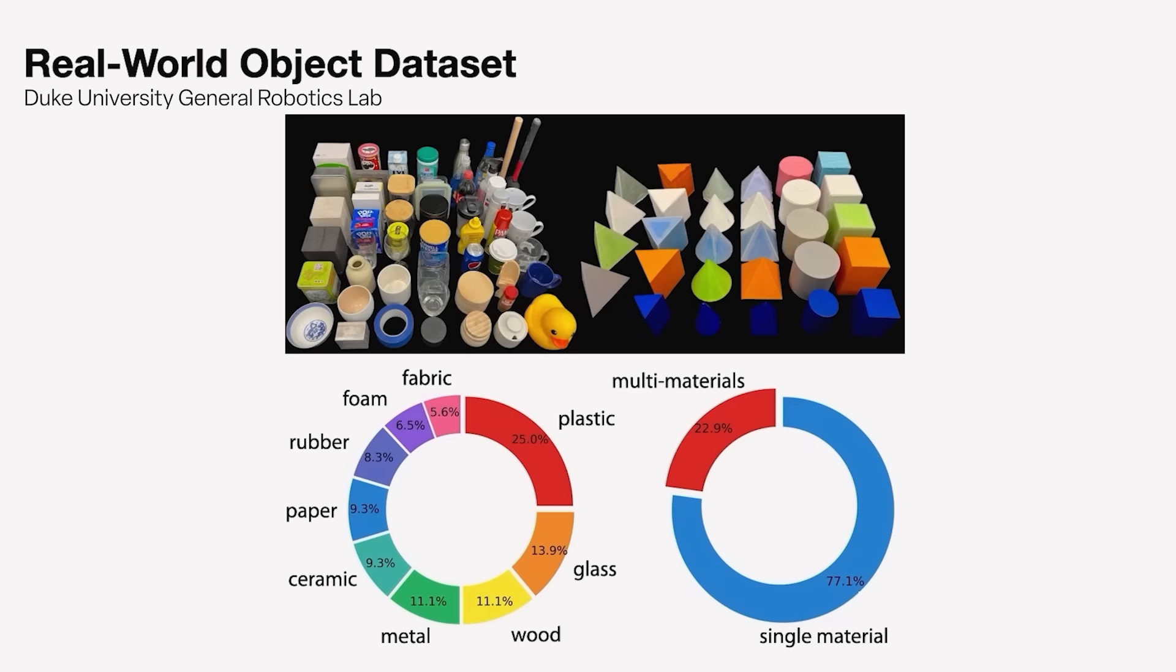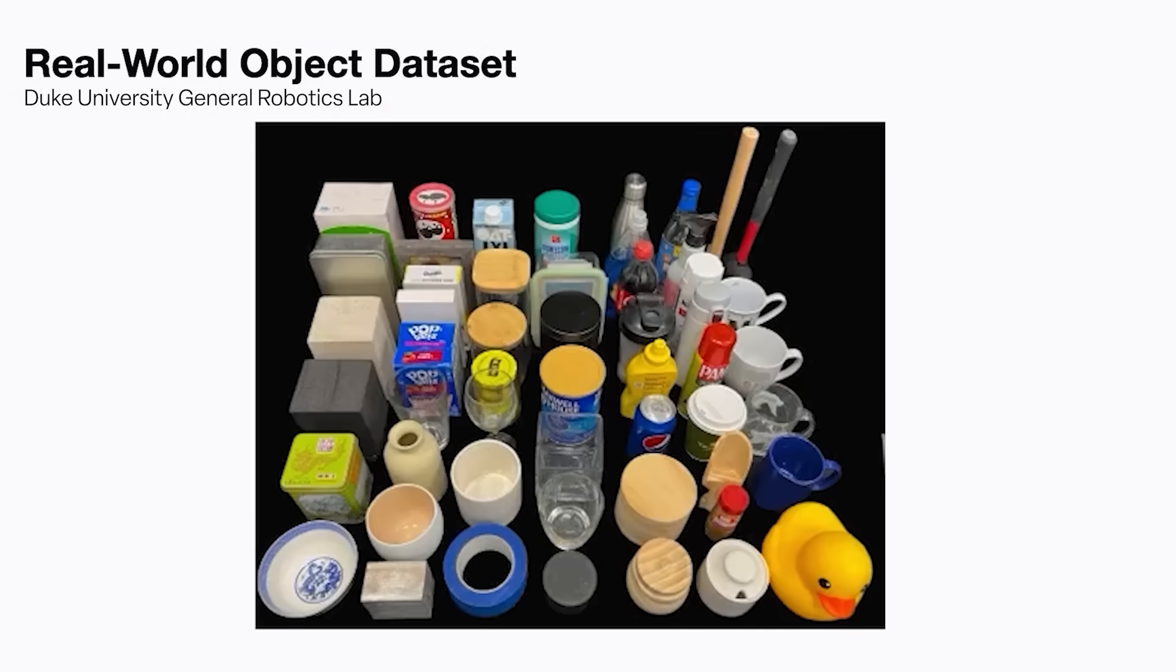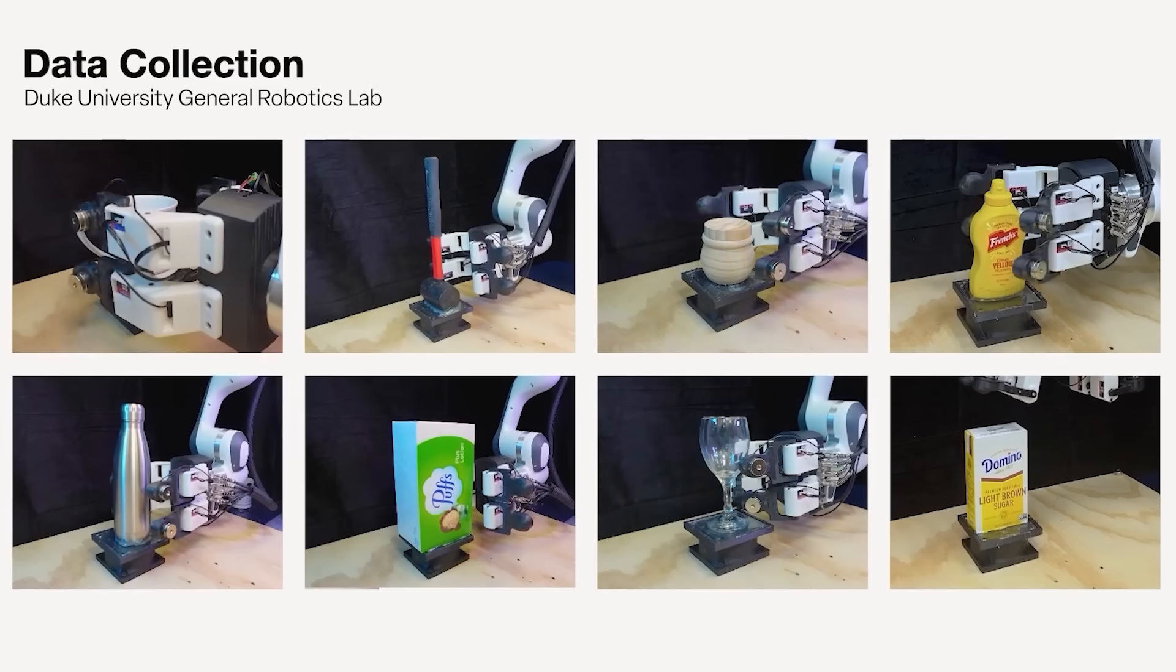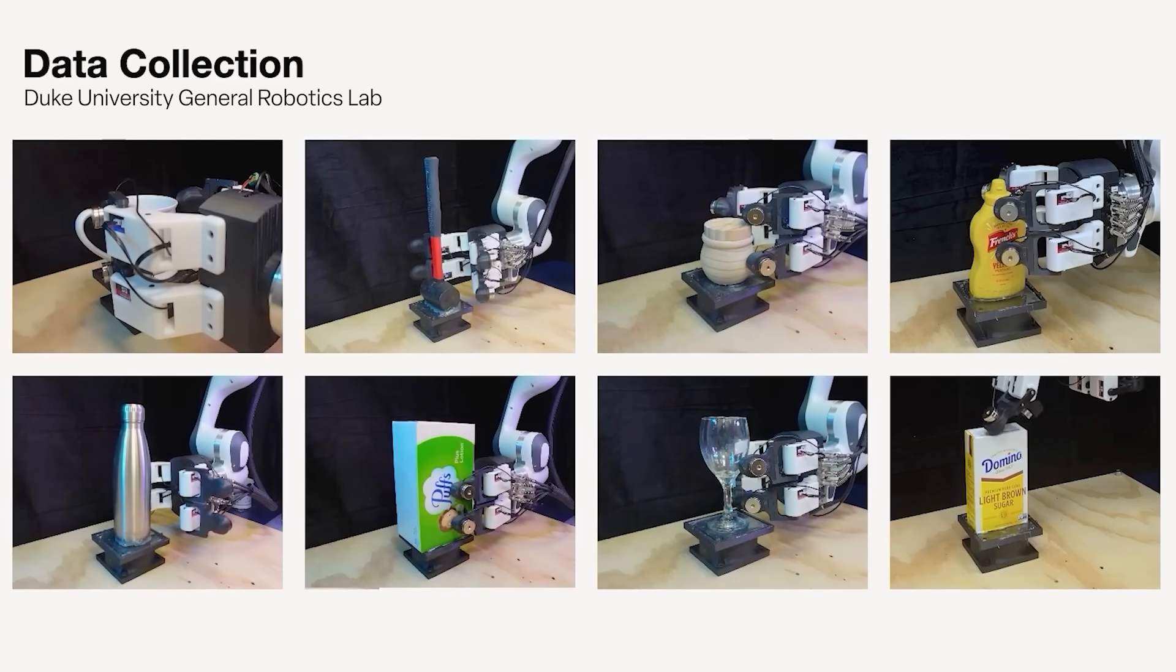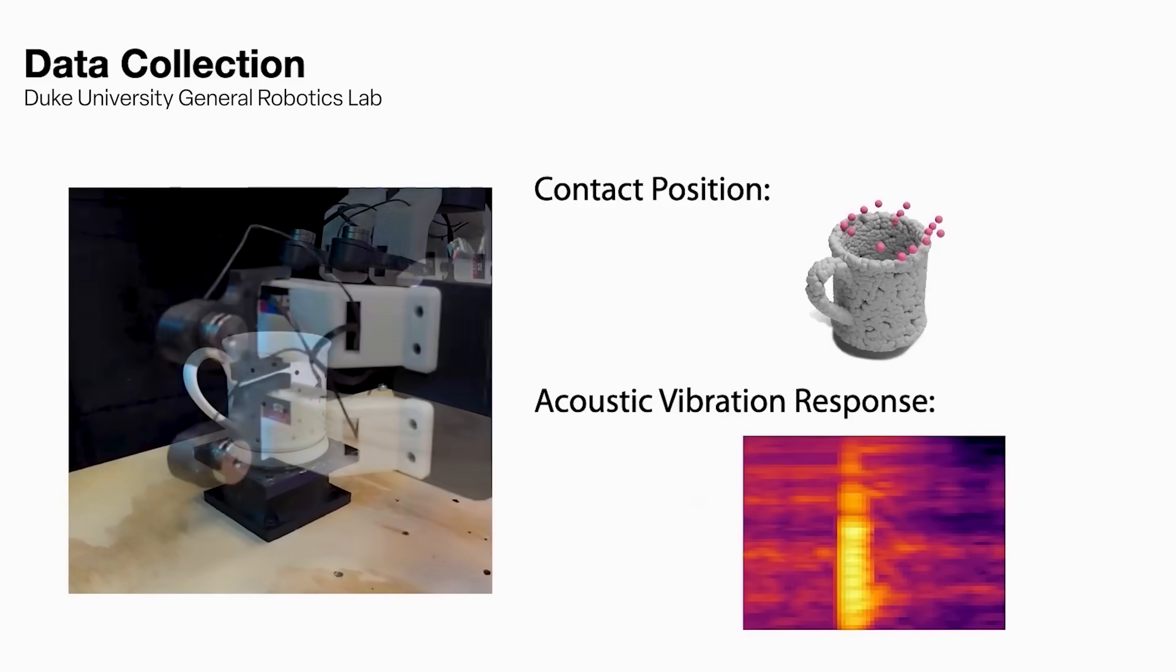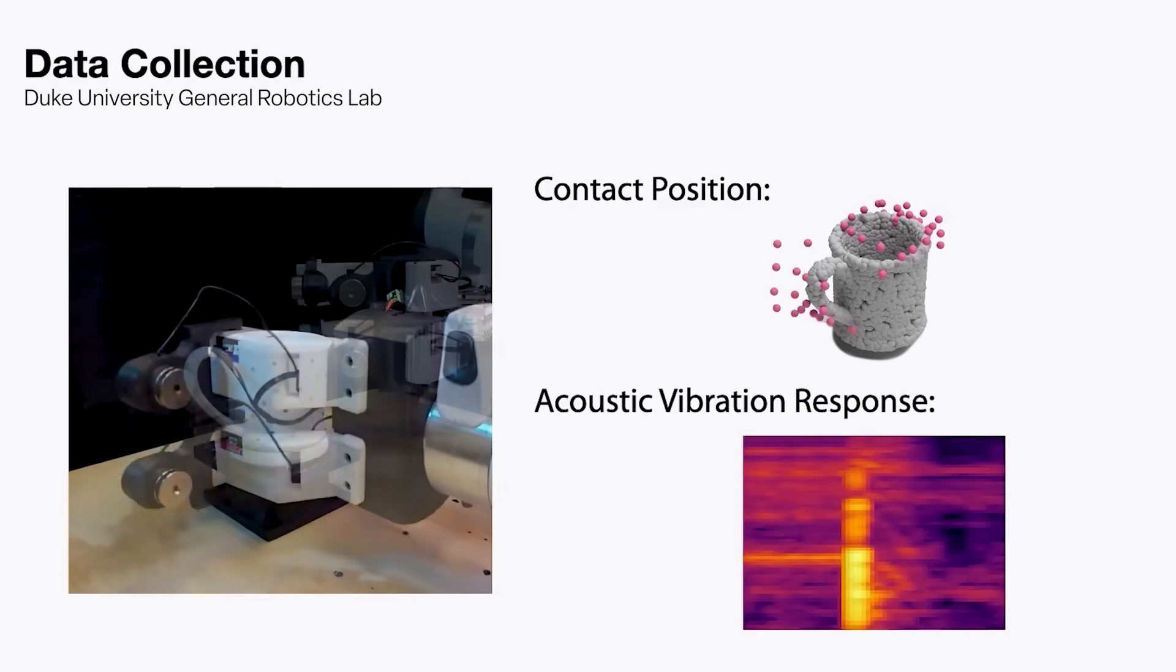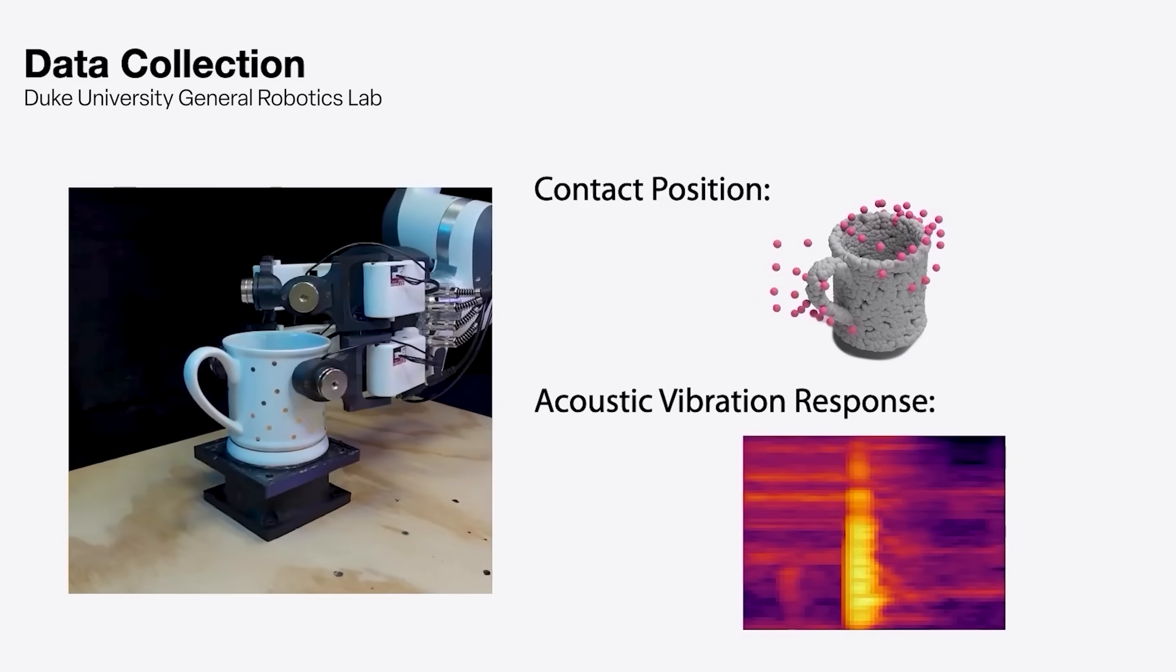We created a dataset with 83 objects, going from simple geometries to complex geometries. Part of this dataset was used to train the Sonic Sense system, and part was used as an evaluation platform, so we can make sure the system not only learns well on the data it has seen, but also captures enough knowledge to generalize on novel objects.